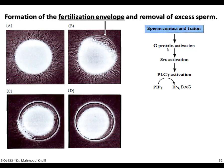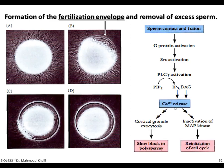Here again are the signaling events. Sperm contact and fusion lead to the activation of a G protein in the cell membrane, which activates another protein — Src — leading to activation of the enzyme phospholipase C. This breaks down PIP2 into IP3 and diacylglycerol (DAG). DAG stays attached to the egg membrane while IP3 migrates to the endoplasmic reticulum and binds to a gated channel, releasing calcium from the endoplasmic reticulum.